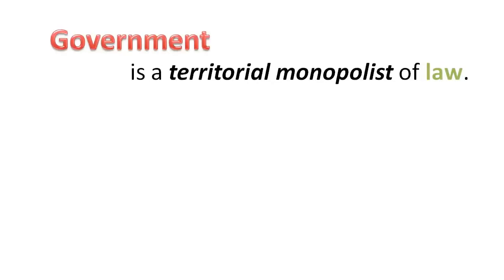What is government? Government is defined as a territorial monopolist in the field of producing law. It is the sole provider of law, the ultimate decision-maker, arbitrator and wielder of force within a territory. As a monopoly, it maintains its position by using aggression — the use or threat of violence — to prevent competing providers of law from emerging.